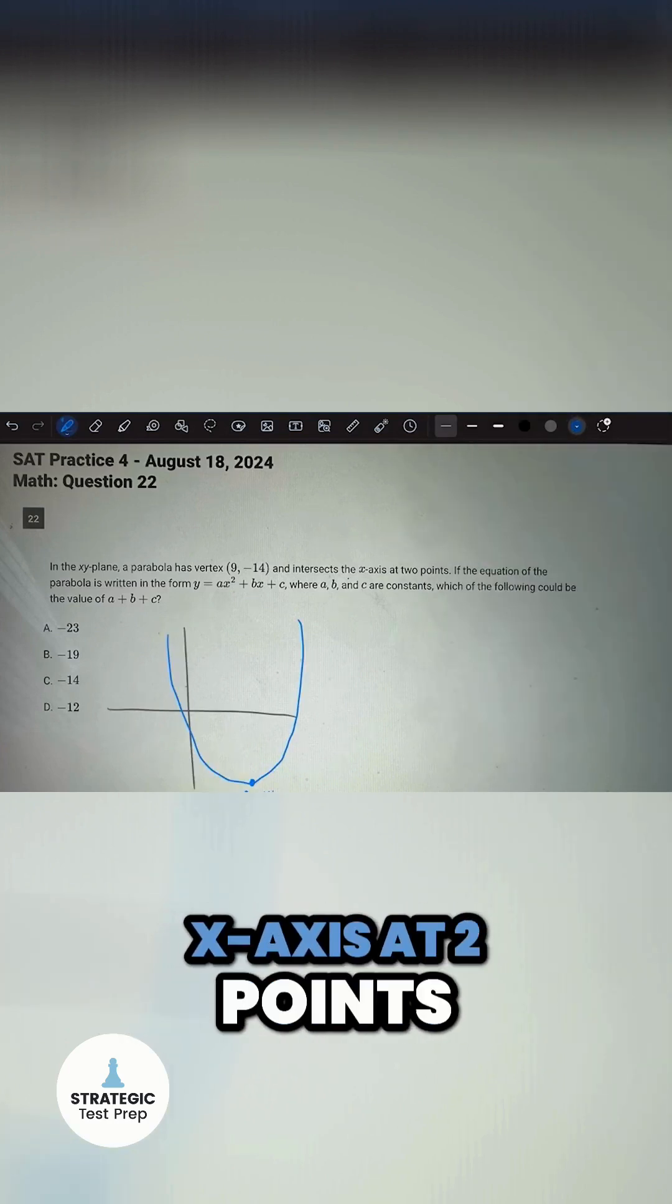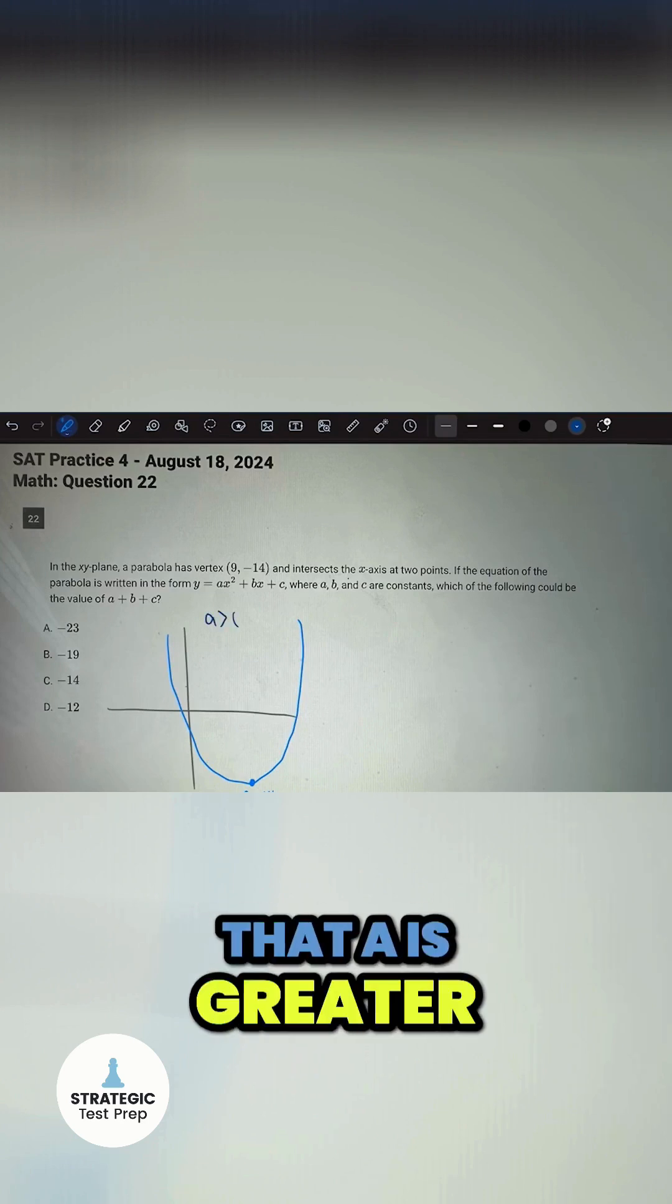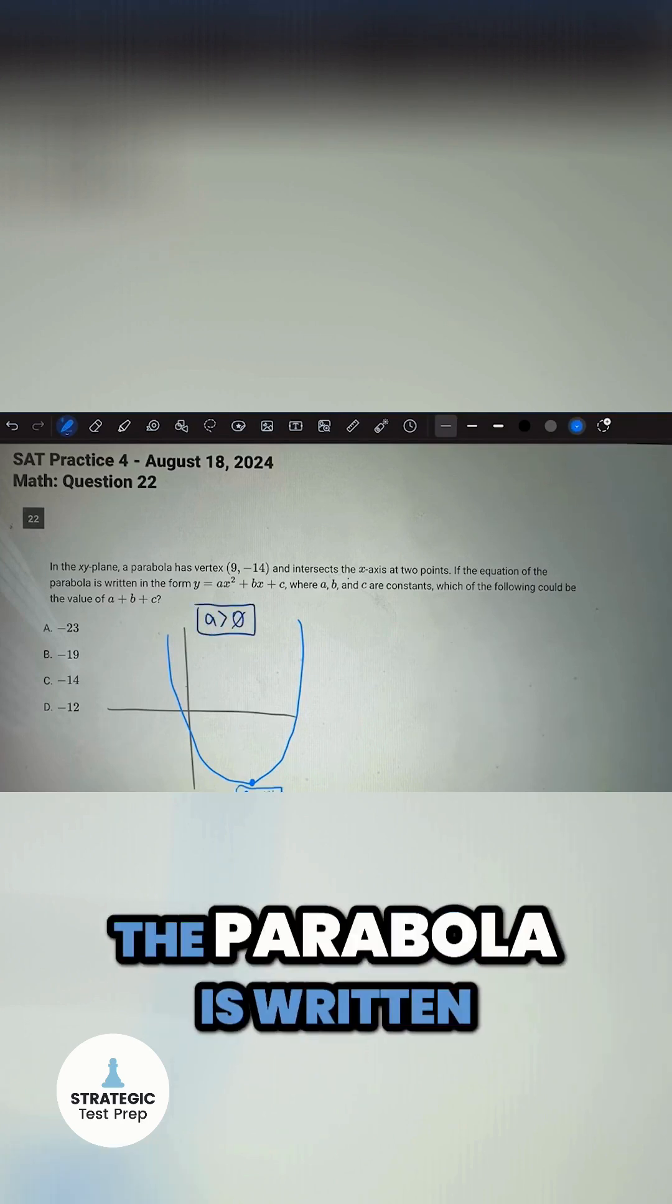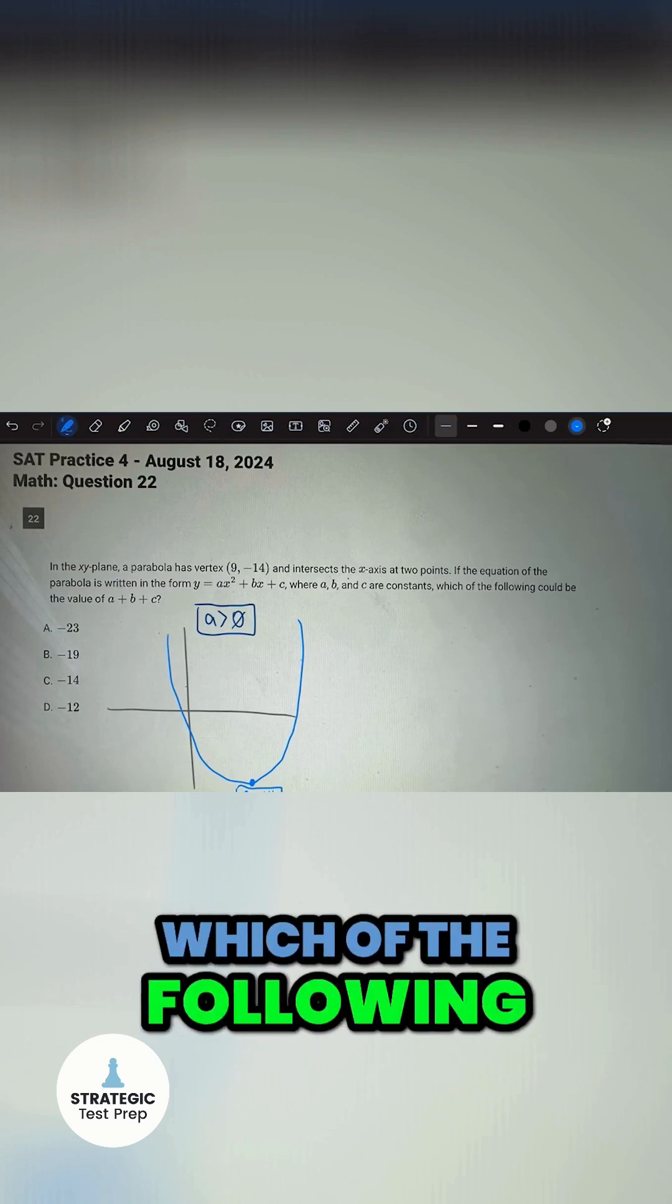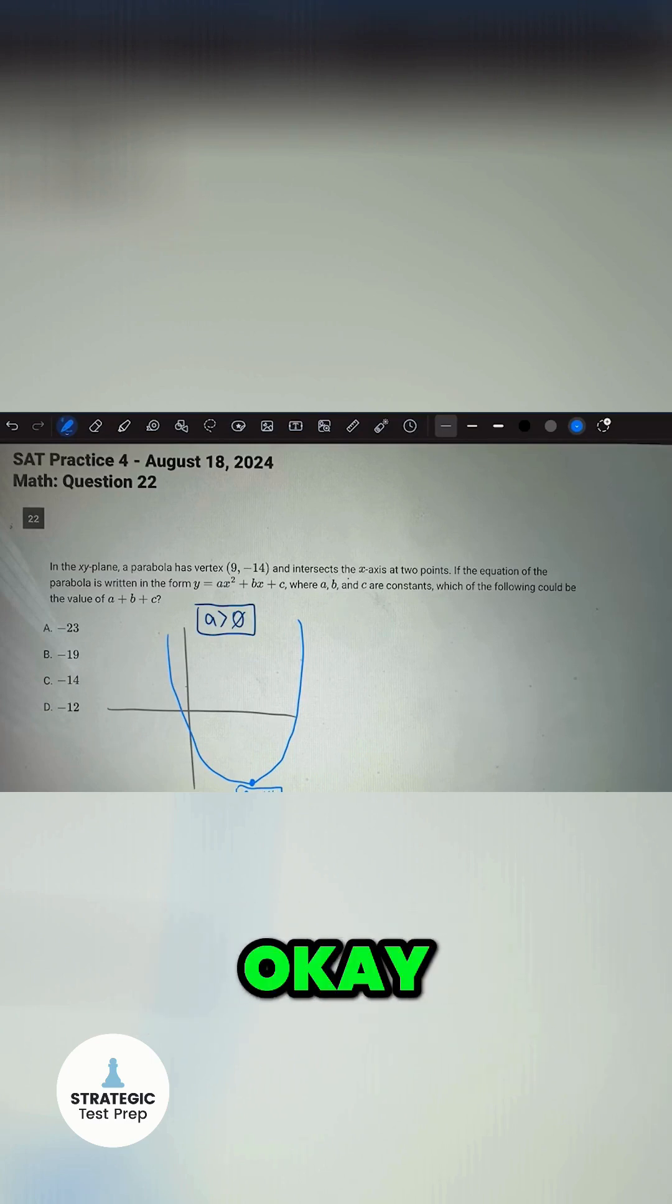we actually know that a is greater than zero, which is very important. The problem says the parabola is written in the form y = ax² + bx + c, where a, b, and c are constants. Which of the following could be the value of a + b + c?